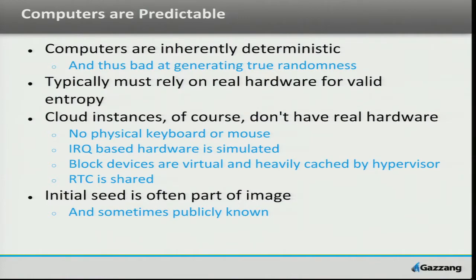The block devices themselves are virtual and heavily cached by the hypervisor. We really want really fast storage coming through our hypervisor to our instance. And what that means is that caching reduces the actual randomness of those reads and writes so much that there's not enough entropy to gather from block reads and writes. The real-time clock is shared across instances, which has some problems in some situations.